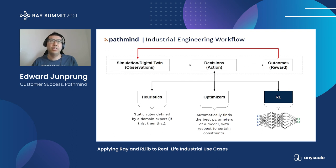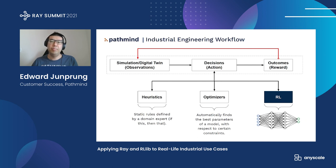The most common approach is heuristic, which is basically a set of static rules defined by a domain expert. These rules tell a system how it should react to certain scenarios — think of it like a series of if statements. The second is the optimizer, not as common as the heuristic. And finally, there's reinforcement learning, which is somewhat of a brand new tactic — it's kind of like a black box, making it hard to explain how it makes a decision. The commonality of all three approaches is that they utilize the same feedback loop: observations, take an action, and evaluate the outcome.